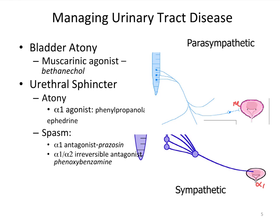There are muscarinic receptors at the sphincter too, leading to relaxation as part of the micturition response. For bladder atony, we stimulate with a muscarinic agonist — bethanechol, which is like acetylcholine but isn't degraded by cholinesterases. We occasionally use this in cats post-urinary urethral blockage, where the bladder has been distended for a long time and needs help contracting again.